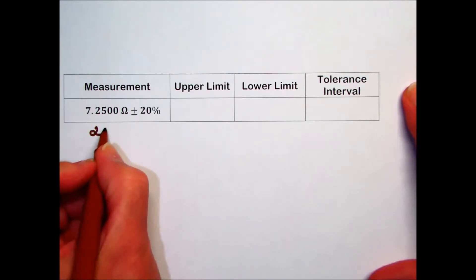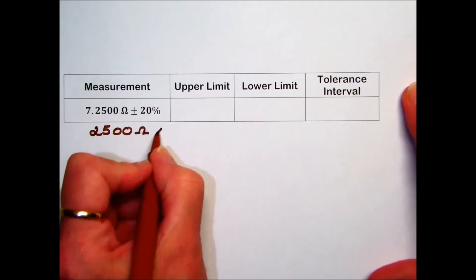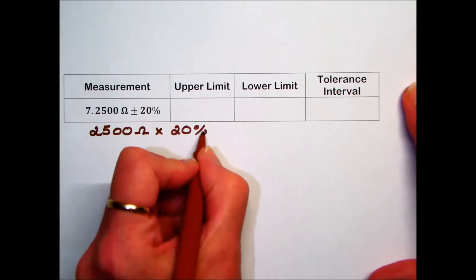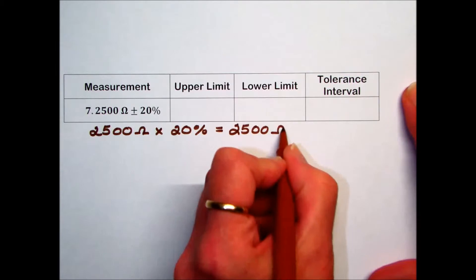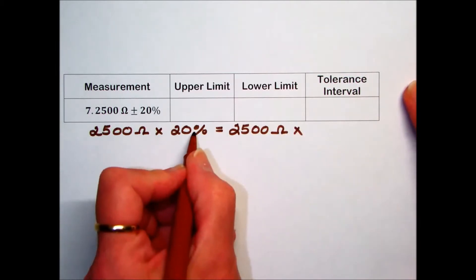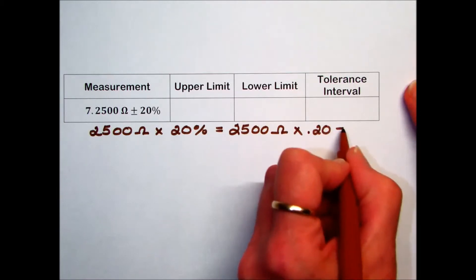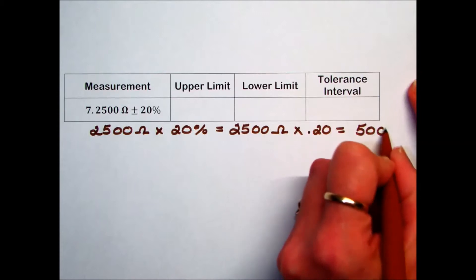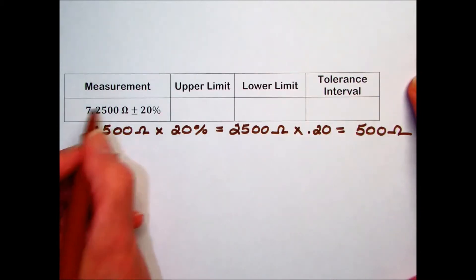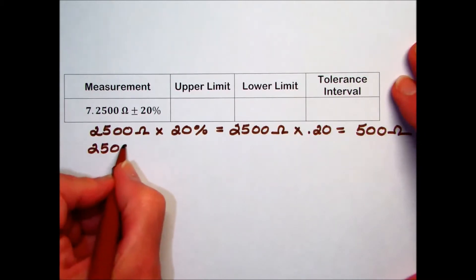To do that, we'll take our standard measurement of 2500 ohms and multiply it by 20 percent, converting that 20 percent into an equivalent decimal, which means we're moving the decimal place two to the left. We'll times it by 0.20, which gives us a value of 500 ohms.